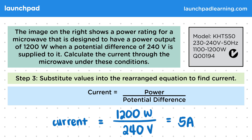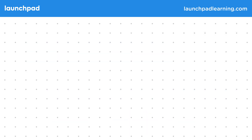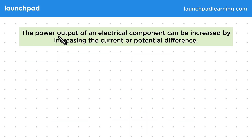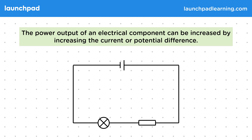Next, let's look at the ways we can increase the power given to a component. The power output of an electrical component can be increased by increasing the current or the potential difference. For example, in this circuit, if we supply more power to the bulb it will increase its brightness.